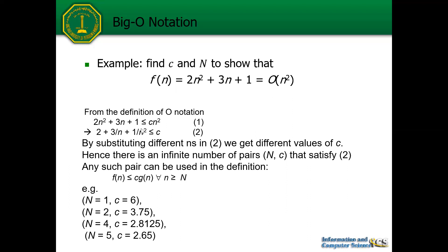To find the threshold N and c, we divide all terms by n², then substitute any value for n and calculate the resulting c. There are infinitely many pairs of c and N. One example of a solution is N = 1 and c = 6, meaning 6n² will always be greater than or equal to this function when n is greater than or equal to 1.